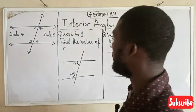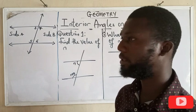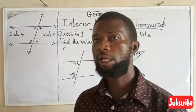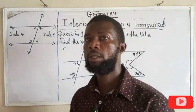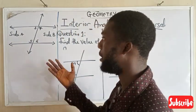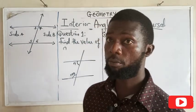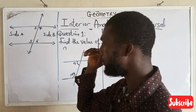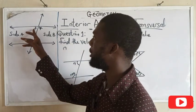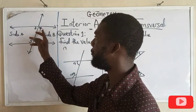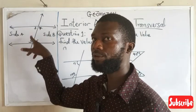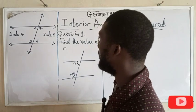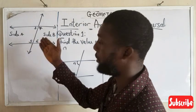So today we are going to be looking at interior angles on a transversal. Let's not forget that a transversal line is that line that cuts a pair of parallel lines or two or more parallel lines. From this, you can see that the angles here—three, four, five, six—are interior, that is they are inside, and this line that cuts is a transversal.